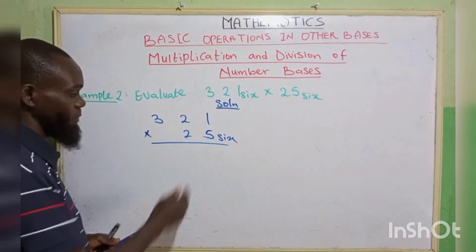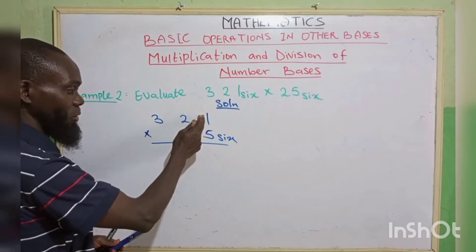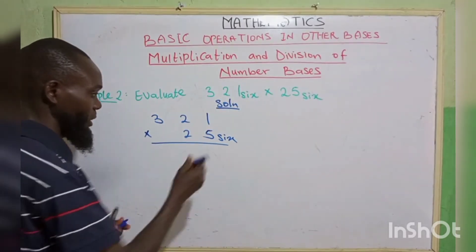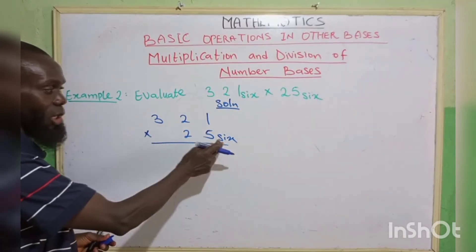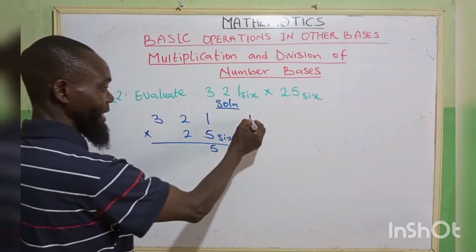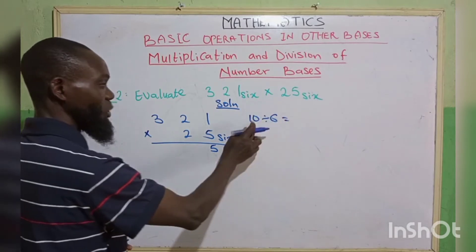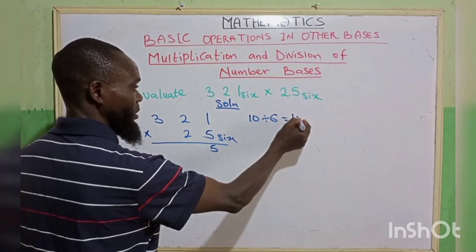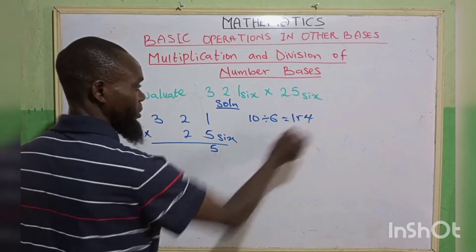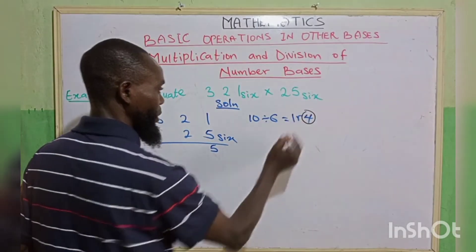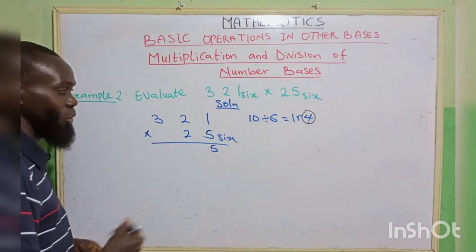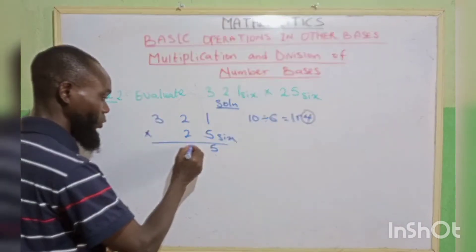Now let us multiply. 5 multiplied by 1, we have 5. It's not up to base 6, you write the 5. 5 times 2, that is 10. It's above 6. That is 10 divided by the base 6. 6 goes in 10, we have 1 remainder 4. Now we're going to write our remainder, which is this 4. You carry your 1. So we write 4, we carry 1.